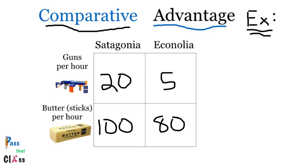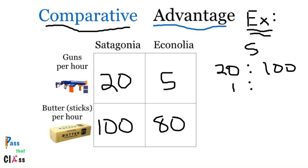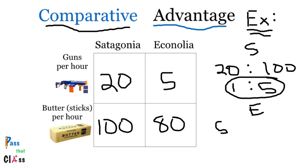Here we have the comparative advantage model. You'll notice it's the same as the absolute advantage model, but now we're going to look at it through opportunity cost. Satagonia, for every 20 guns it produces, gives up 100 sticks of butter — so for every one gun, it gives up 5 sticks of butter. Econalia, for every 5 guns it produces, has to give up 80 sticks of butter — so for every one gun, it has to give up 16 sticks of butter.